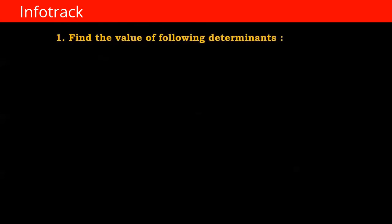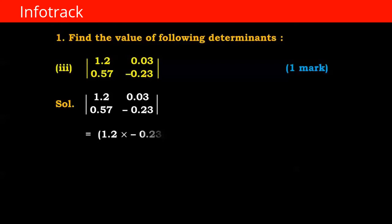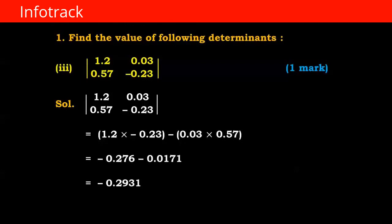Question number 1: find the value of the following determinants. In question number 3, the numbers in the determinant are 1.20, 0.03, 0.57, and minus 0.23. We cross multiply: 1.2 into minus 0.23, minus 0.03 into 0.57. After multiplication, the first bracket gives minus 0.276 and the second bracket gives minus 0.0171. Minus minus becomes plus, so we add these numbers and the answer is minus 0.2931. The value of the determinant is minus 0.2931.